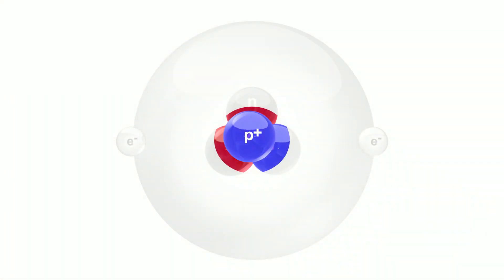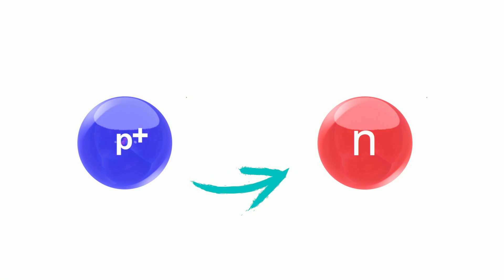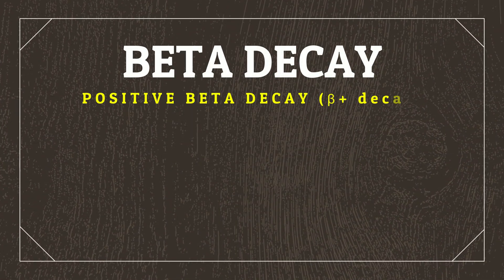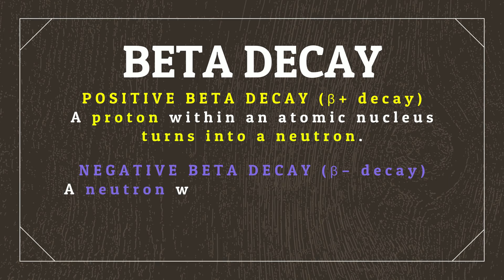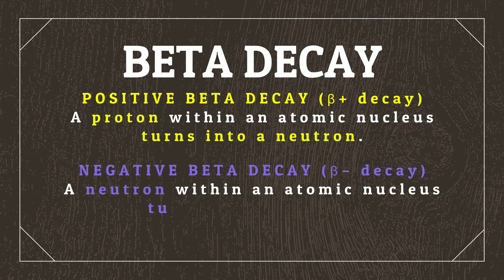Protons, however, are positively charged and do have a neutral equivalent: the neutron. Not only that, but there is real-life precedent for protons changing into neutrons and vice versa, through a process called beta decay. In positive beta decay, a proton within an atomic nucleus turns into a neutron, while in negative beta decay, a neutron within an atomic nucleus turns into a proton. There's more involved behind the scenes in beta decay, but for the purposes of worldbuilding, that's what's important to understand.